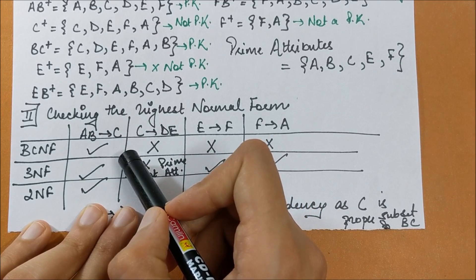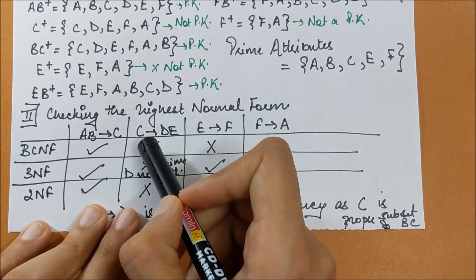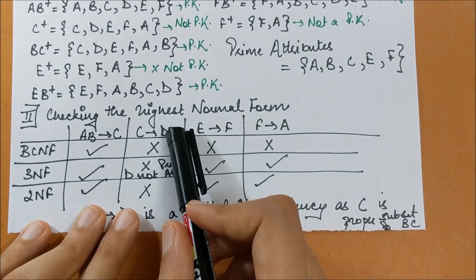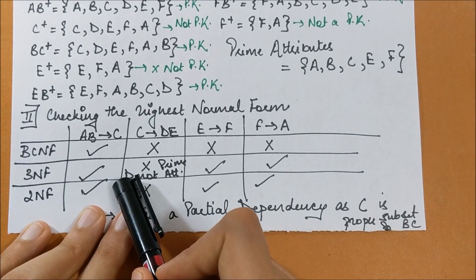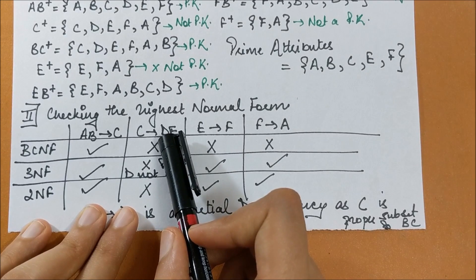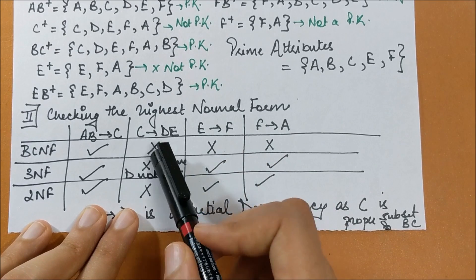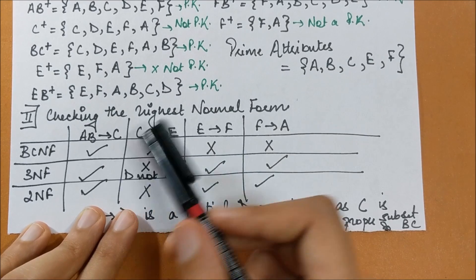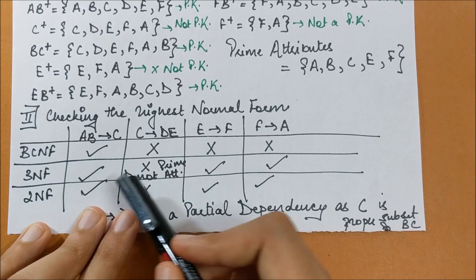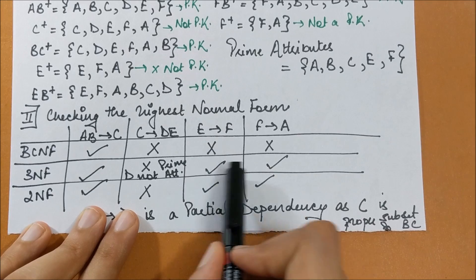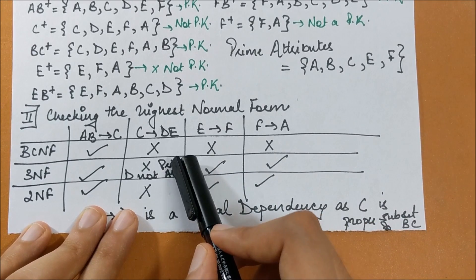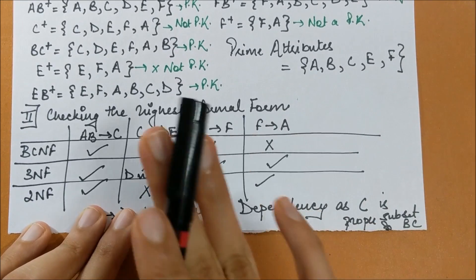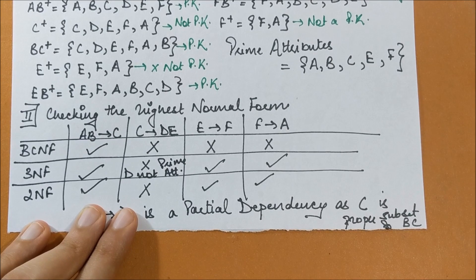For C → DE: C is not a primary key, so this is not in BCNF. Checking 3NF — either the left-hand side must be a primary key or the right-hand side must contain only prime attributes. E is a prime attribute, but D is not. Because of the sub-dependency C → D, this functional dependency is not in 3NF — it represents a transitive dependency.